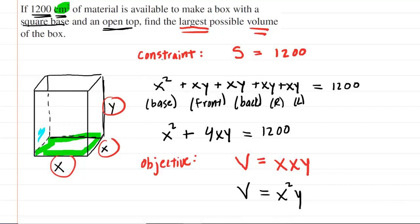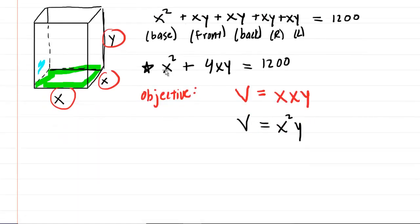So we have our picture, our constraint, our objective. Next, what you need to do is you want to go back to your constraint equation, and you want to solve that, usually for Y, just to keep things consistent. You can try to solve it for X. In this case, that would be very difficult. But usually, I like to just solve for Y to keep things consistent. So let's actually make some room so that we can solve our constraint equation for Y.